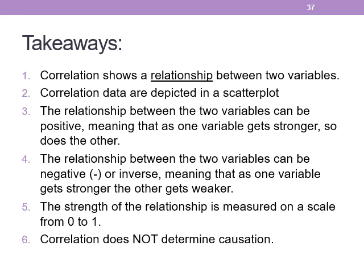Takeaways on correlation: correlation shows a relationship between two variables. Correlation data are depicted in a scatter plot. The relationship can be positive — as one gets stronger, so does the other — or negative, so that as one variable gets stronger, the other gets weaker. Strength is measured on a scale from 0 to 1, and correlation does not determine causation.